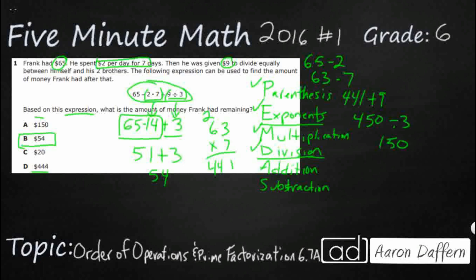So if I didn't do anything correct, I could have gotten this 150, but obviously it doesn't make sense. He had 65, he spends money and he ends up with 150 more. And if you really do it wrong, you can also get the 441. But our answer is going to be B, $54.